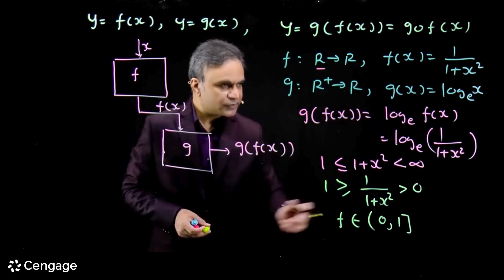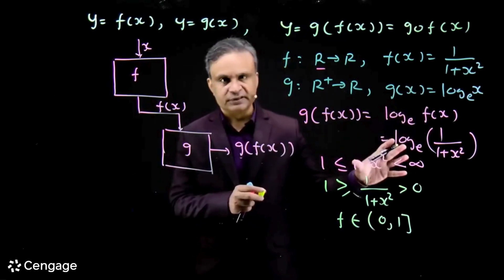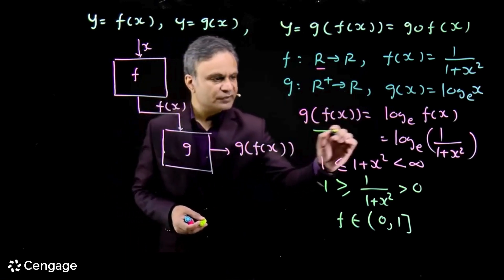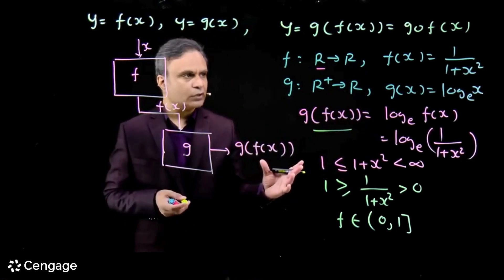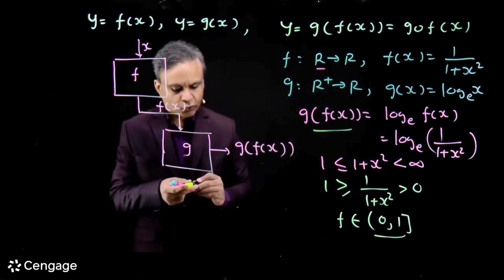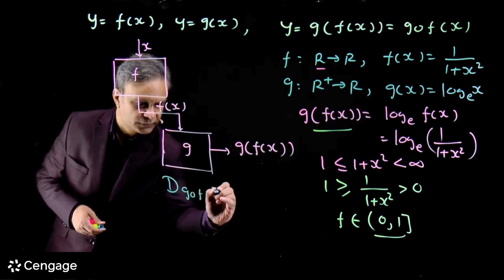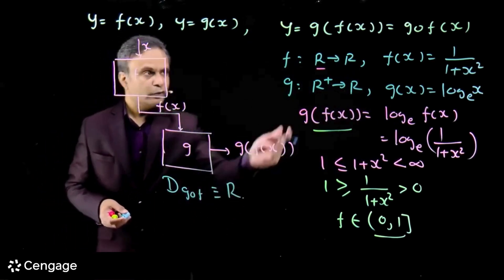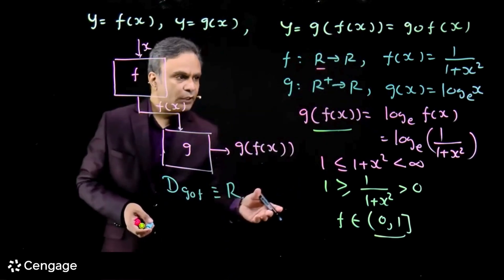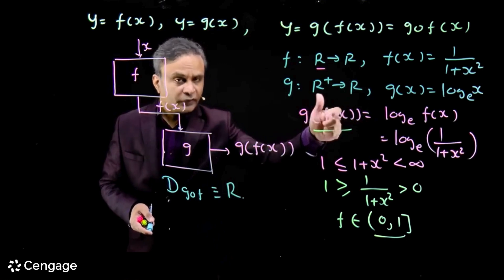This range (0, 1] is a subset of R⁺, so all these values will be acceptable to function g(x). Therefore, the domain of g(f(x)) will be set R, because for all x belonging to R, f(x) belongs to (0, 1] and all these values are acceptable to function g(x). This domain is the same as the domain of the inner function f.